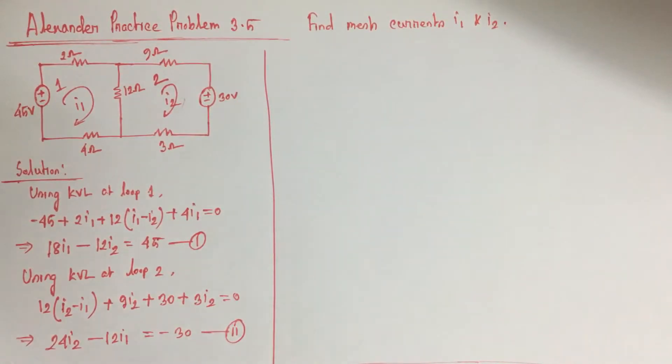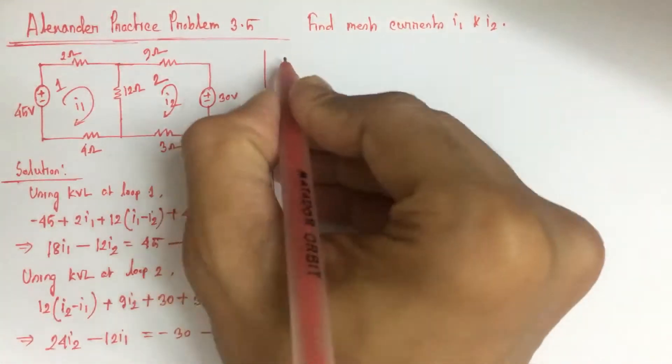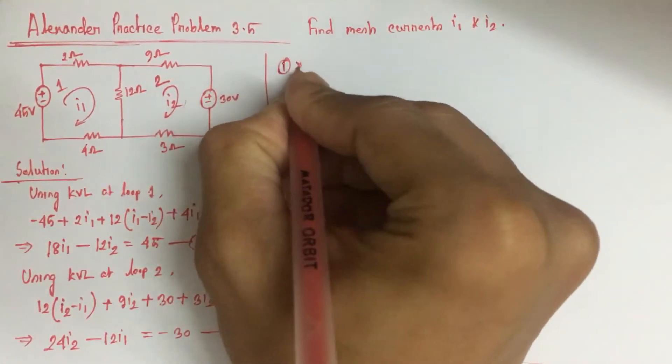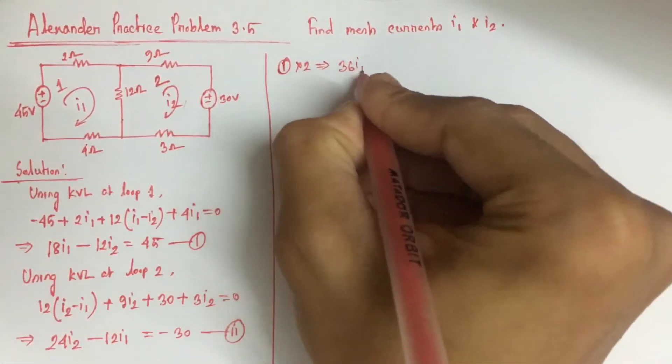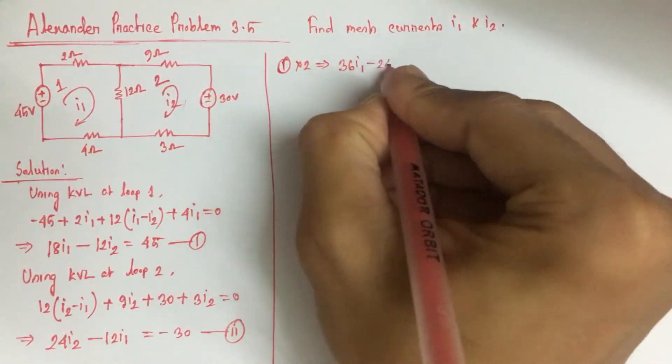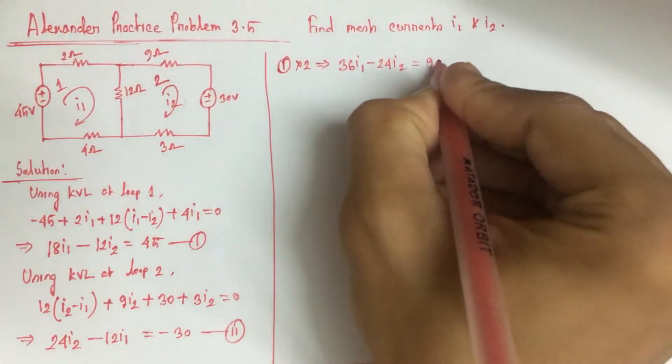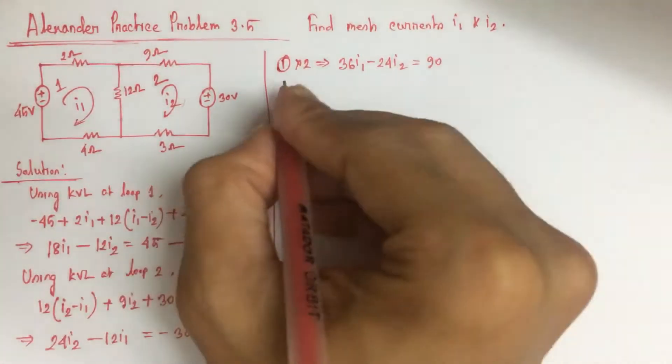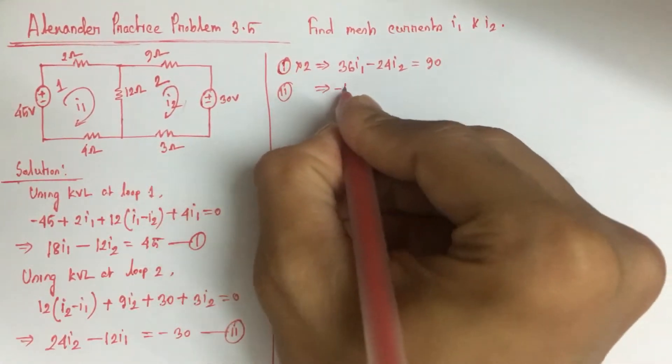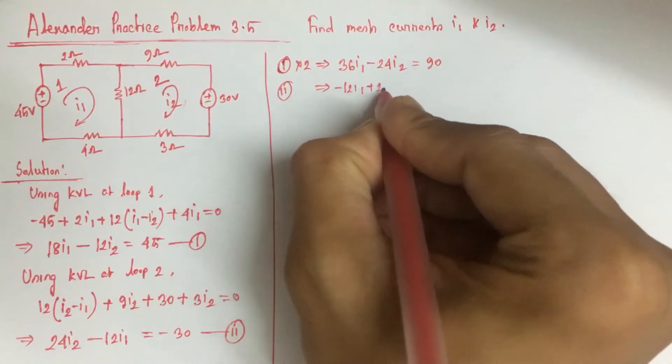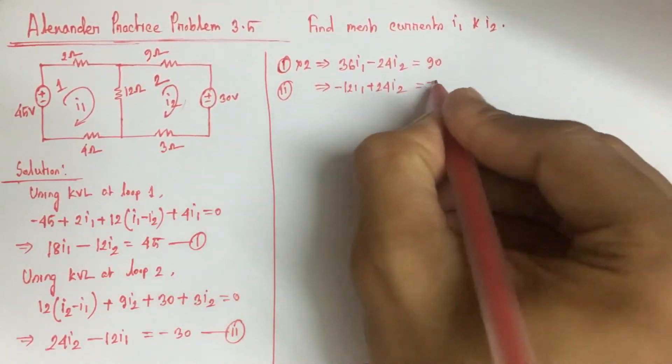let equation 1 be multiplied by 2. So equation 1 multiplied by 2 will yield 36I1 minus 24I2 equals 90, and equation 2 is minus 12I1 plus 24I2 equals minus 30.